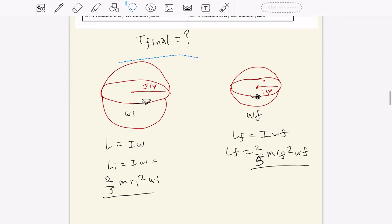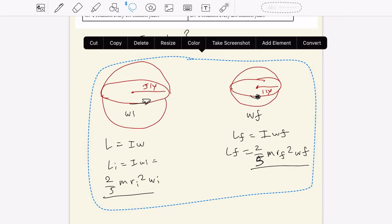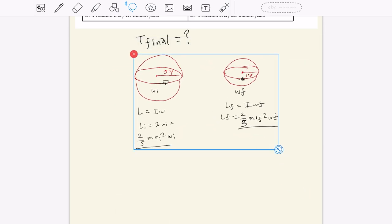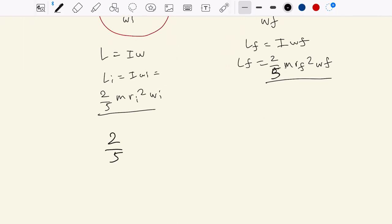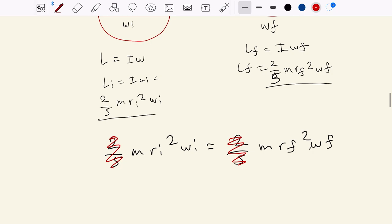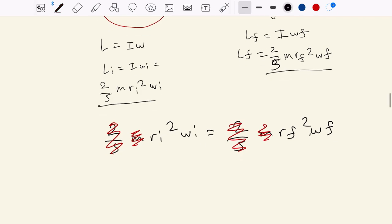That's your formula, and so we're going to write li equals iwi, which is going to be equal to, using our equation, 2 over 5 mri squared wi. And let's do the same thing for this side of the equation. So lf equals iwf, which means that lf equals 2 over 5 mrf squared times wf.